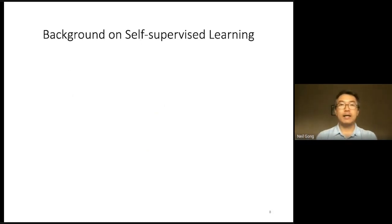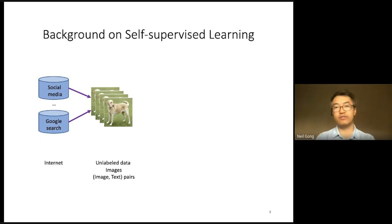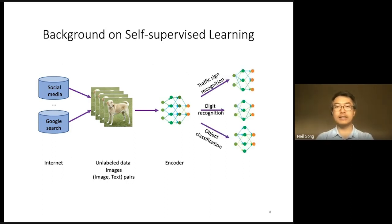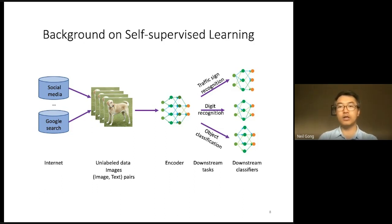Before introducing our backdoor attack, I'd like to describe a little more background on self-supervised learning. Suppose we are given some unlabeled data, which could be images or image-text pairs. These unlabeled data are often collected from the public internet, such as social media sites, Google search, and so on. Given this unlabeled data, self-supervised learning aims to pre-train an encoder, and the pre-trained encoder is then used as a general purpose feature extractor to build classifiers for different tasks. In self-supervised learning, these tasks are often called downstream tasks, and these classifiers are often called downstream classifiers.